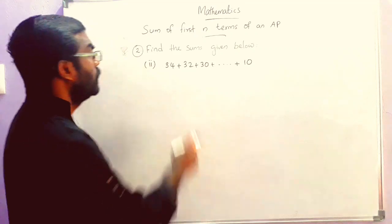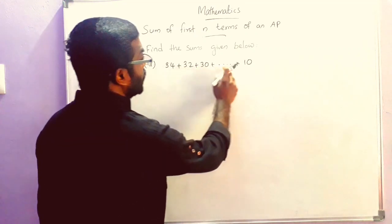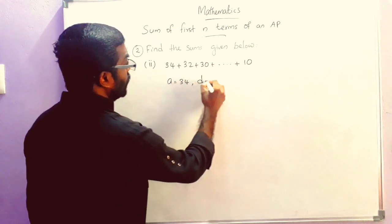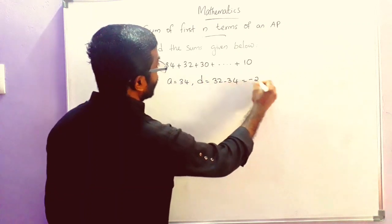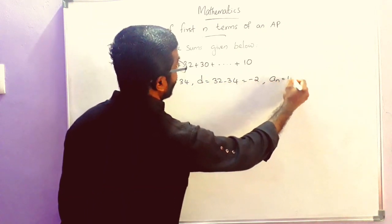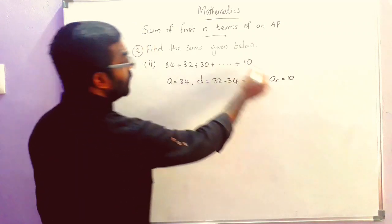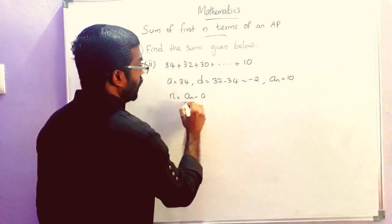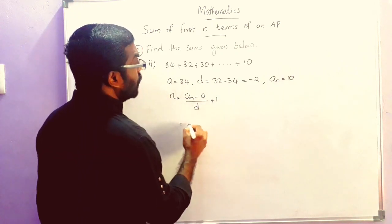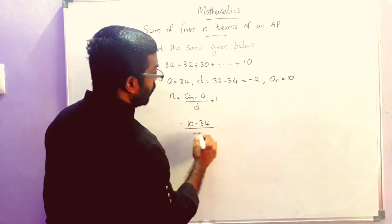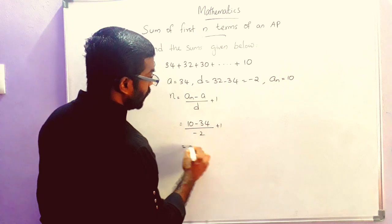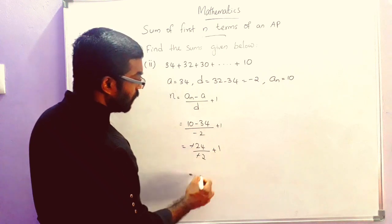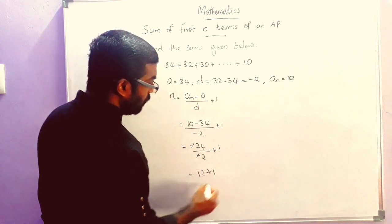The next sub-question is 34 plus 32 plus 30 plus etc. plus 10. Here A is equal to 34, D is equal to 32 minus 34, which is equal to minus 2, and AN is equal to 10. N is equal to AN minus A by D plus 1, which is 10 minus 34 by minus 2 plus 1. That is minus 24 divided by minus 2 plus 1, and minus and minus cancel. 24 by 2 is 12 plus 1, which equals 13.